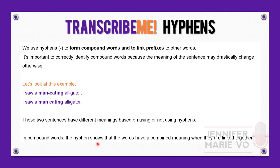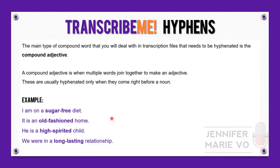In compound words, the hyphen shows that the words have a combined meaning when they are linked together. So combining "man-eating" means that a man-eating dinosaur or a man-eating dog would be one that likes to eat men. The main type of compound word you will deal with in transcription files that needs to be hyphenated is the compound adjective — when multiple words join together to make an adjective. These are usually hyphenated only when they come right before a noun.